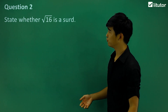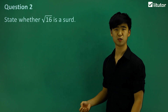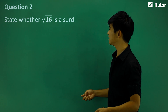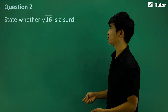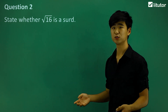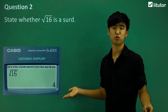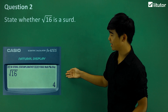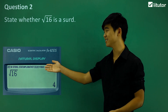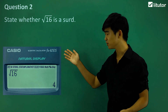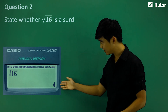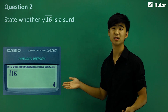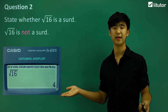We'll move on to question 2: state whether the square root of 16 is a third. Let's just put it into our calculator. We just get 4. Of course, 16 is a square number, so it just comes out cleanly as 4. So this one is not a third.